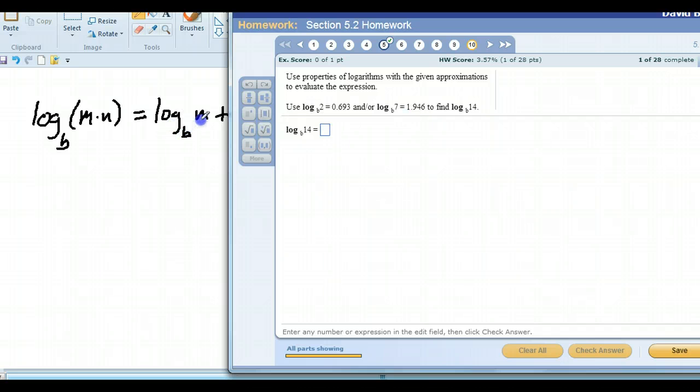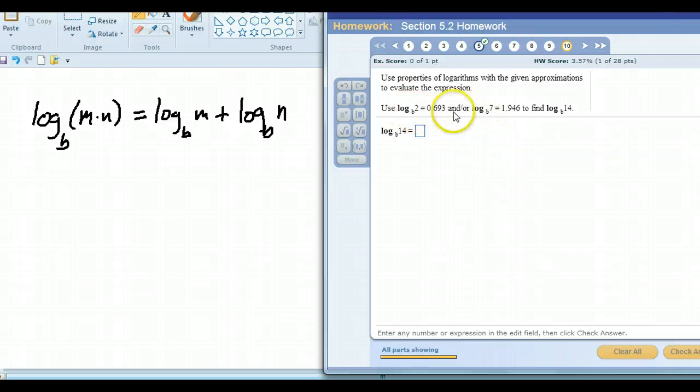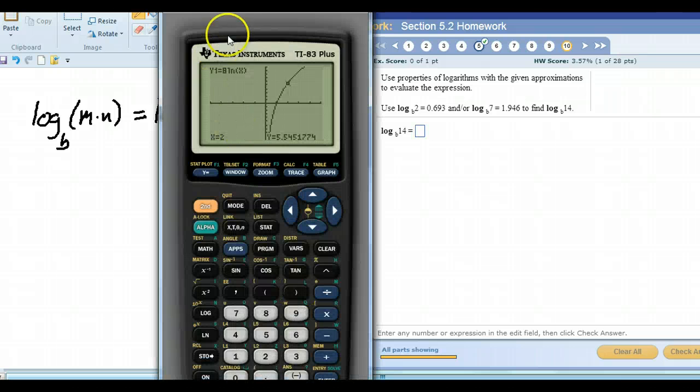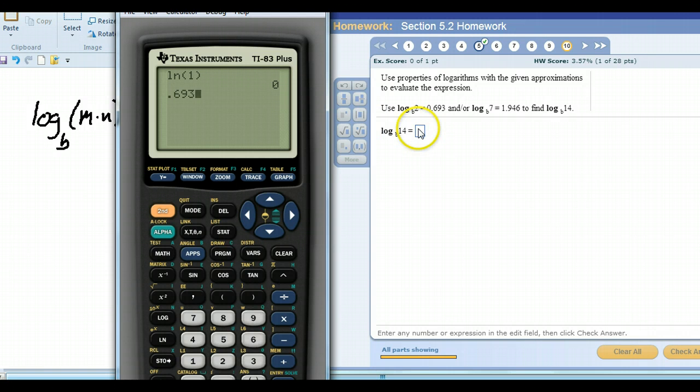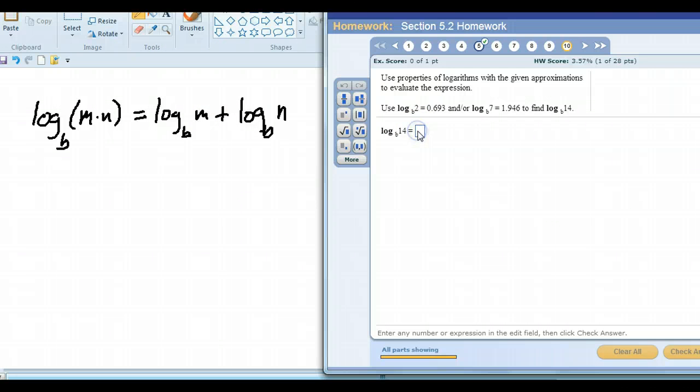So the log base b of this, the product of this m and n, all right, the product of 2 and 7 is 14, all right, equals the sum of these two logs. So the log base b of 14 is going to equal the sum of the log base b of 2 and the sum of log base b of 7. So that means I can take my calculator and I can just add these two decimals together, 0.693 plus 1.46, 2.639, and that's my answer.